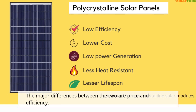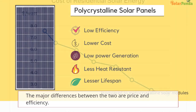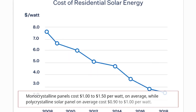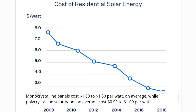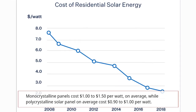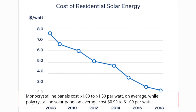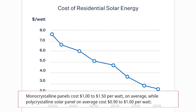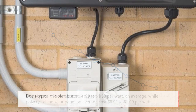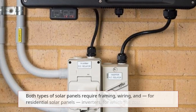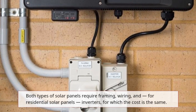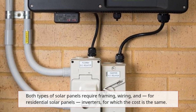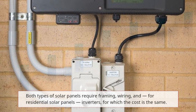The major differences between the two come down to price and efficiency. Monocrystalline panels cost about $1.00 to $1.50 per watt on average, while polycrystalline solar panels cost about $0.90 to $1.00 per watt on average. Both types of solar panels require framing, wiring, and for residential installations you need inverters, for which the cost will be the same.